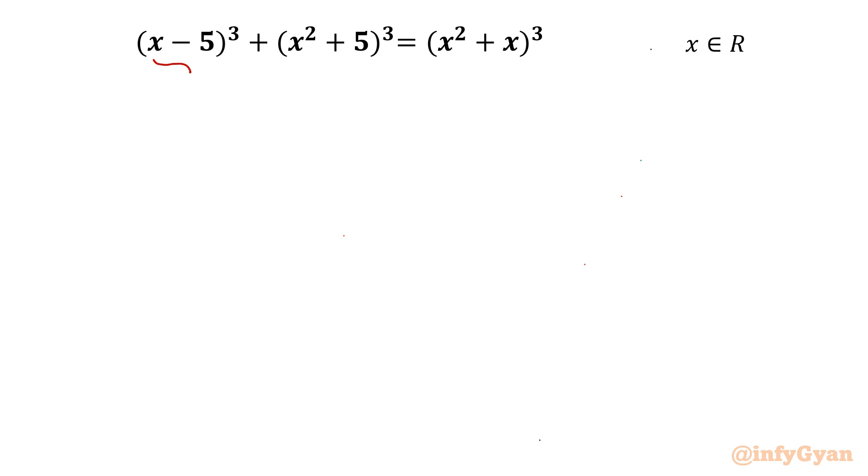If I will consider this one as A and the second parenthesis as B, then I can see it is a³ + b³ written. So I can use the algebraic identity which is a³ + b³ = (a+b)(a² + b² - ab). I will use this identity.